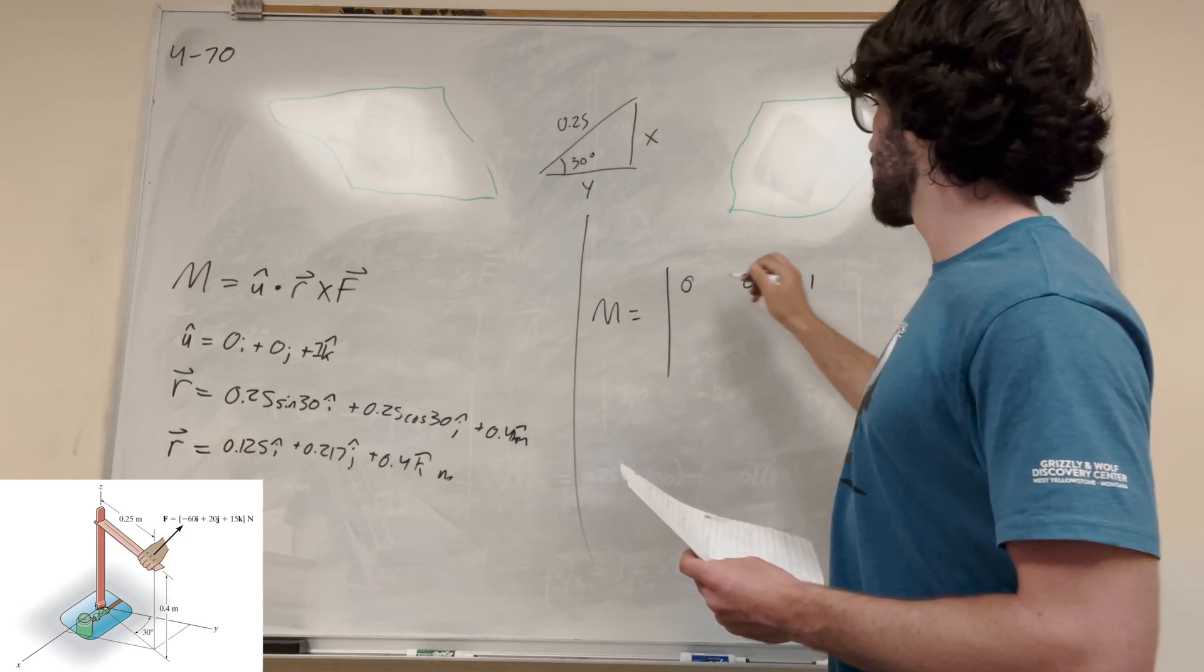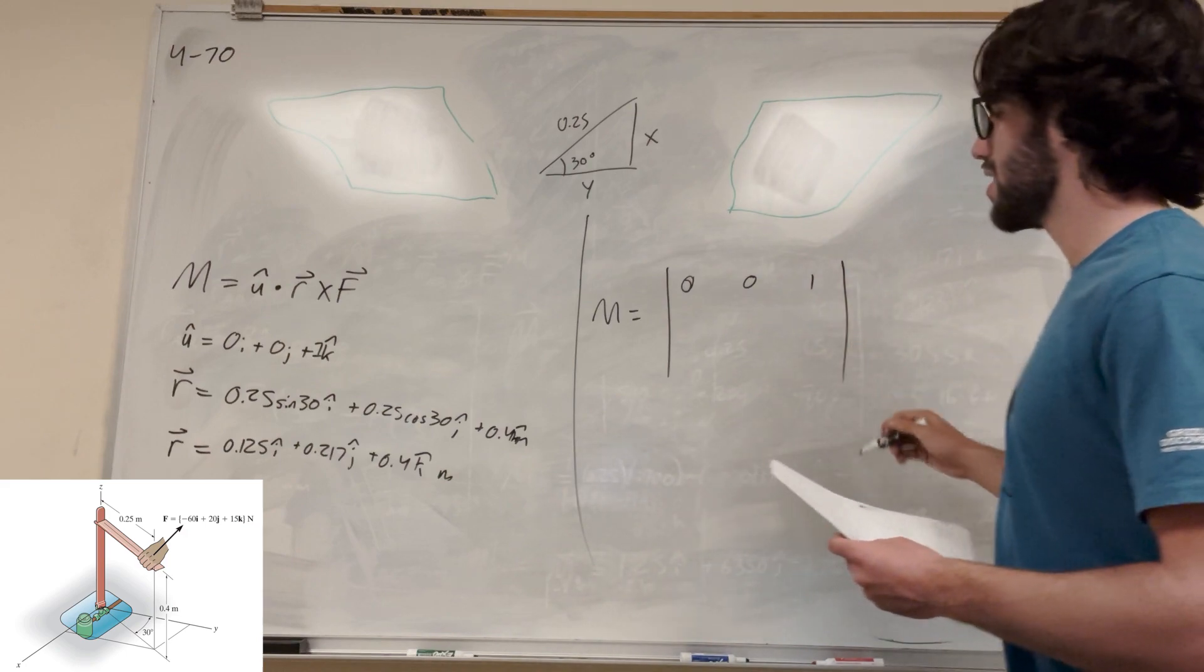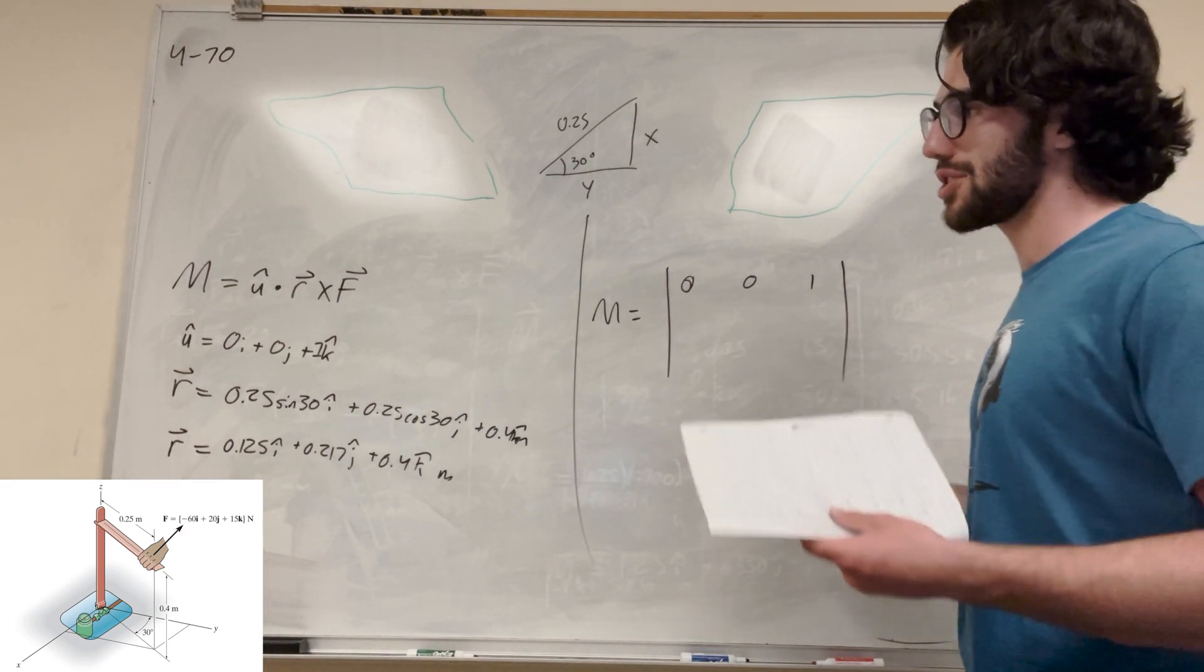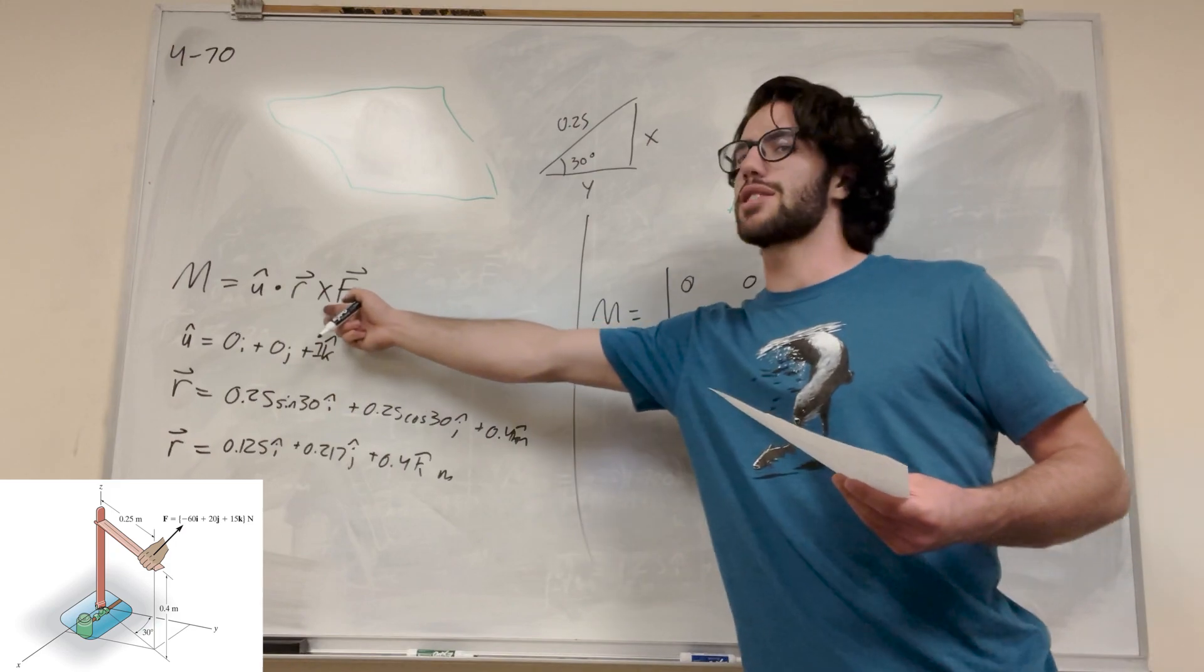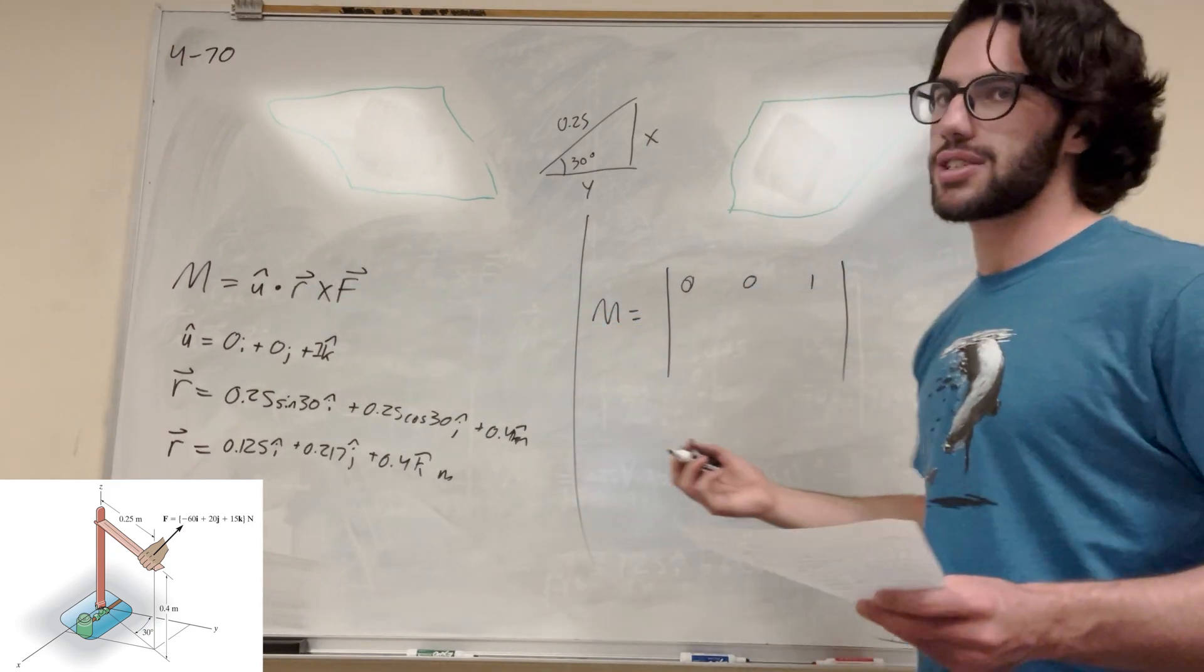So it's going to be 0, 0, 1 instead. This is going to be less steps, but if you don't know how to do this or if you feel concerned on the test, you can just do the cross product and then do the dot product afterwards. It's going to be no issue.